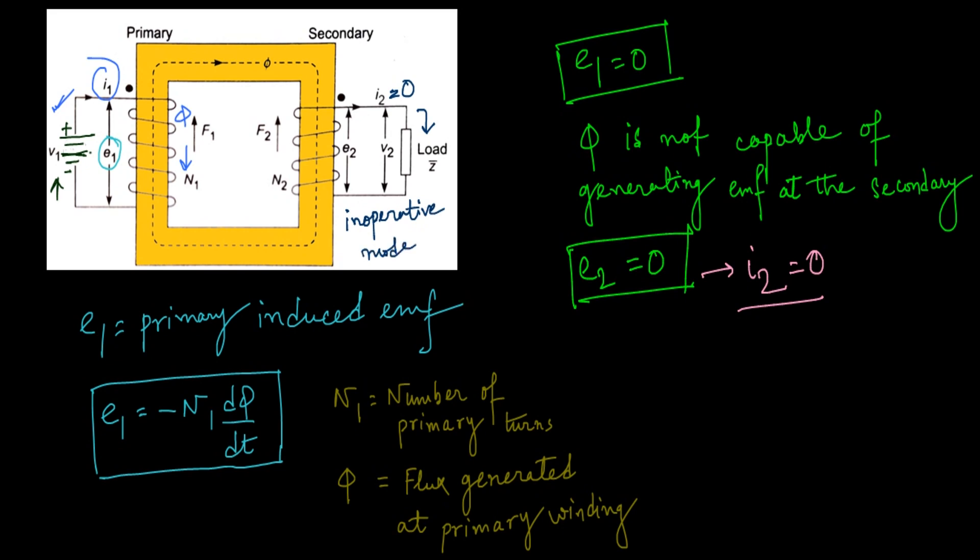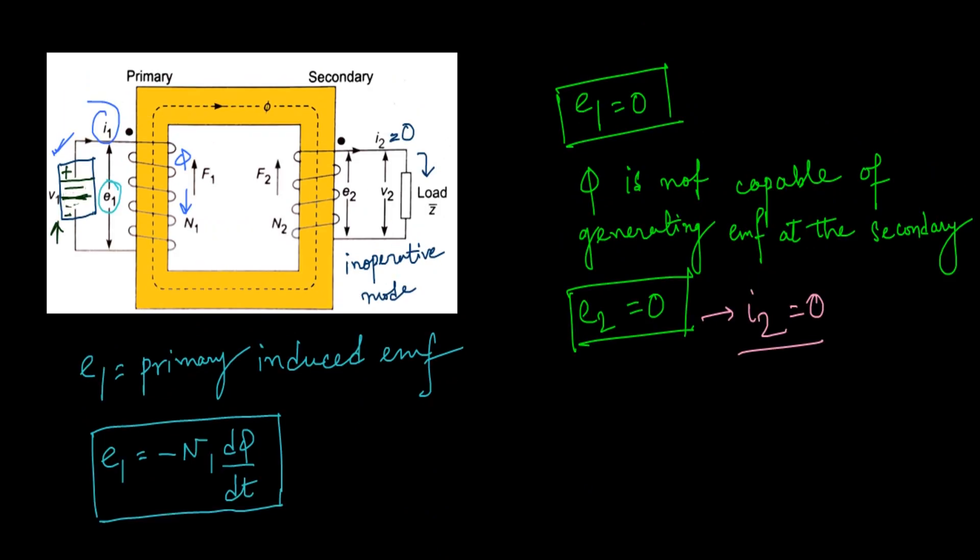We cannot run a load, like our domestic loads or any heavy load, whenever the secondary current is 0. And why the secondary current is 0? Because we have applied a DC supply in the primary, so that we have found that due to not generation of induced EMF, DC is not applicable for transformer operation. This is our condition 1.